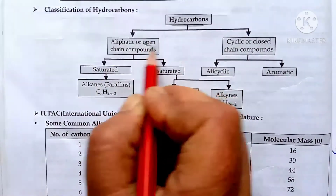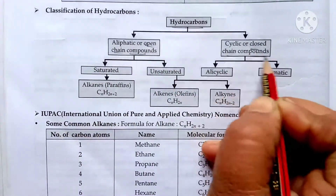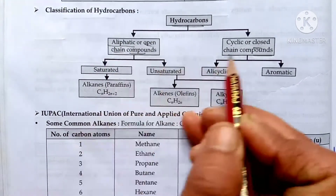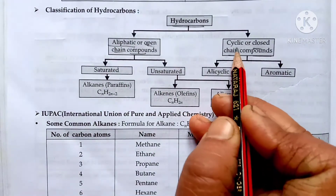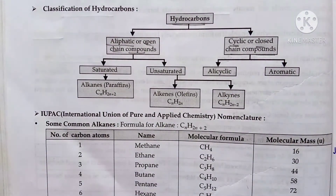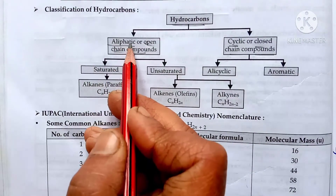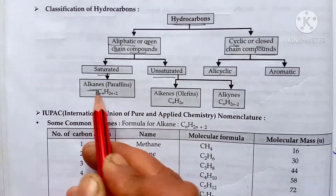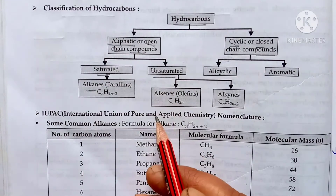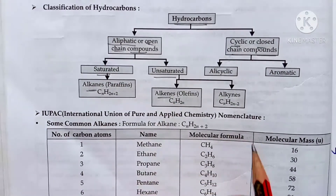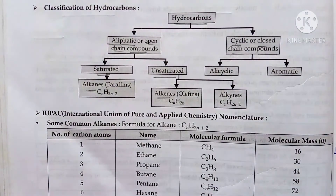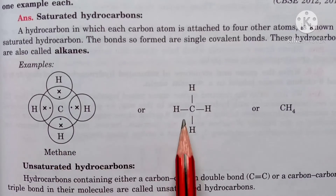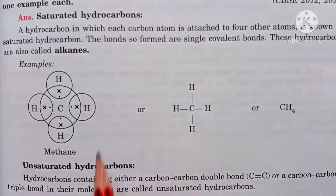Now let's talk about hydrocarbons — compounds of carbon and hydrogen. These can be open-chain compounds or closed-chain compounds. Open-chain compounds are called aliphatic hydrocarbons, and closed-chain compounds are called cyclic hydrocarbons. Open-chain hydrocarbons are further divided into saturated and unsaturated types. Saturated hydrocarbons contain alkanes, while unsaturated hydrocarbons contain alkenes and alkynes.